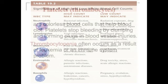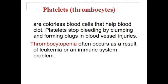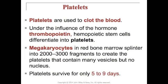Platelets begin on page 710. Thrombocytes are colorless blood cells that help blood to clot; platelets stop bleeding by clumping and forming plugs at blood vessel injuries. Thrombocytopenia often occurs as a result of leukemia or an immune system problem. Platelets are used to clot the blood under the influence of the hormone thrombopoietin.